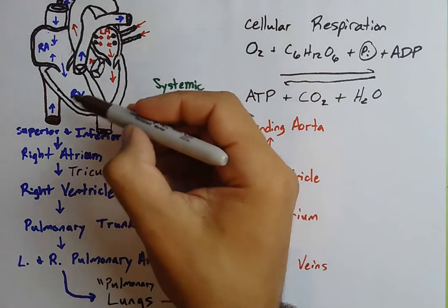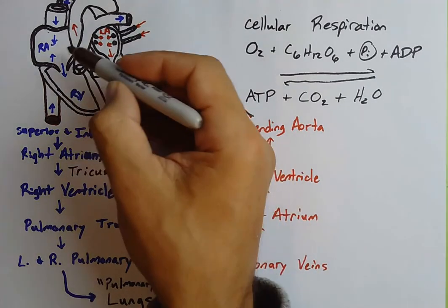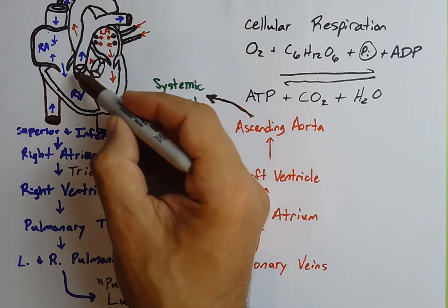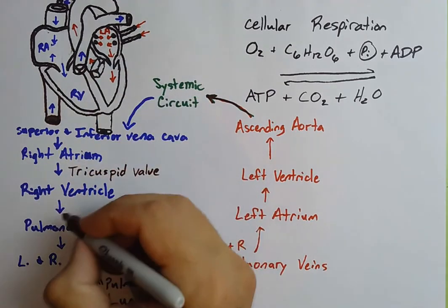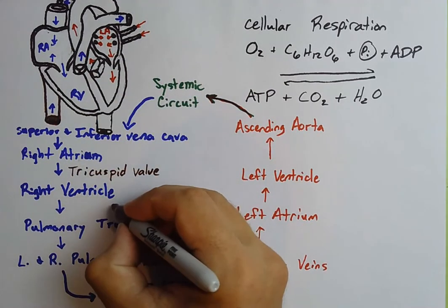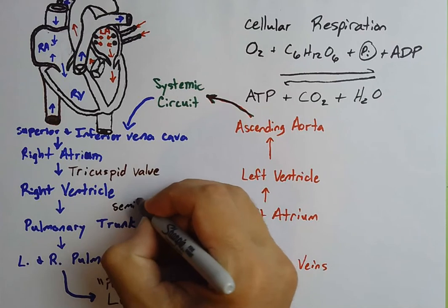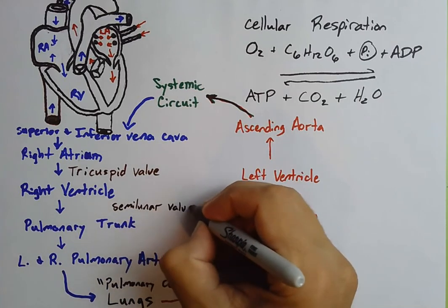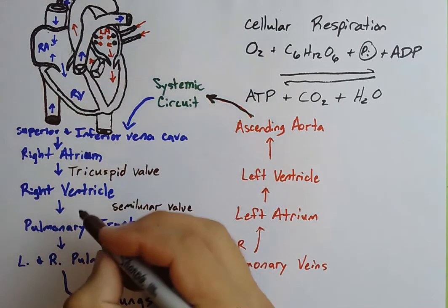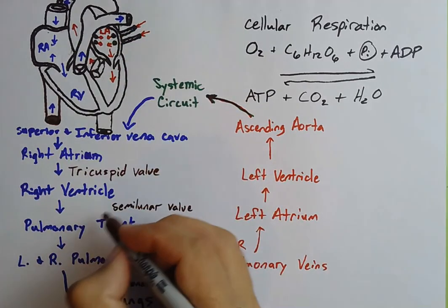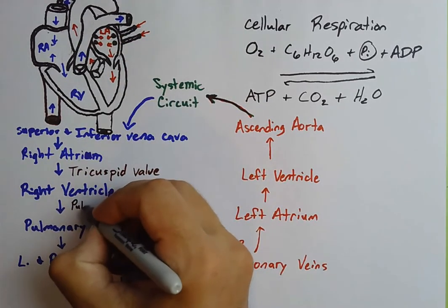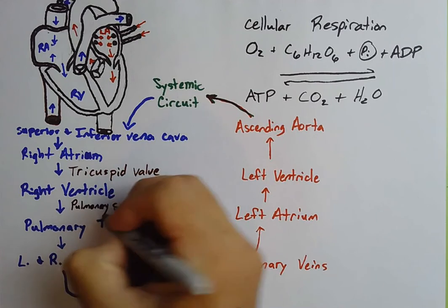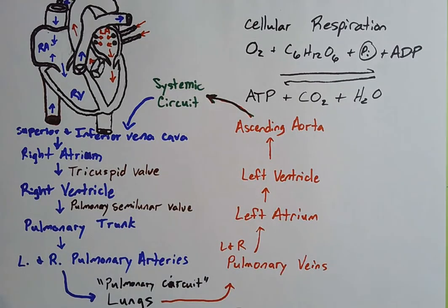From the right ventricle, blood flows into the pulmonary trunk through a semilunar valve. This semilunar valve moves blood into the pulmonary circuit and the pulmonary trunk, so we call it the pulmonary semilunar valve. It all makes sense — just draw out the diagram and the flowchart.